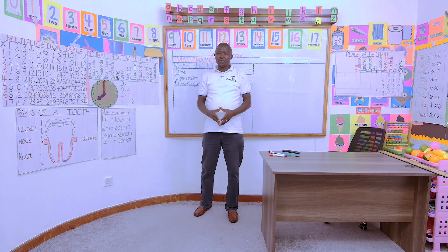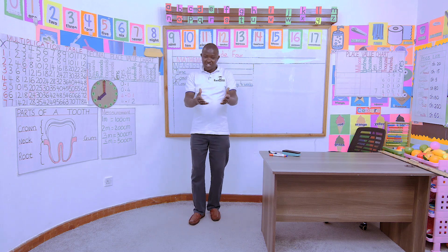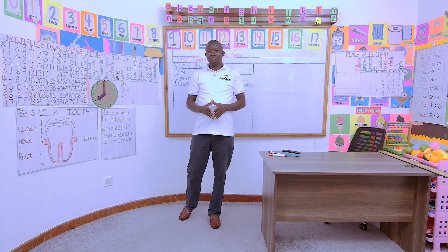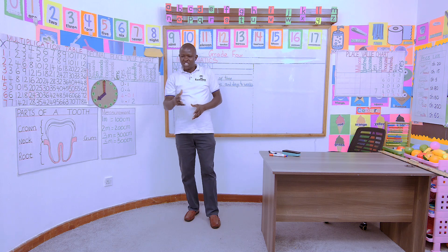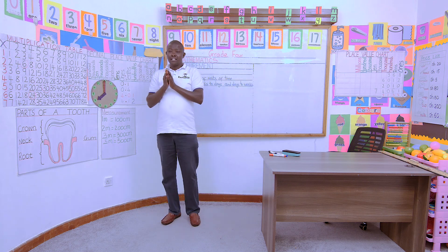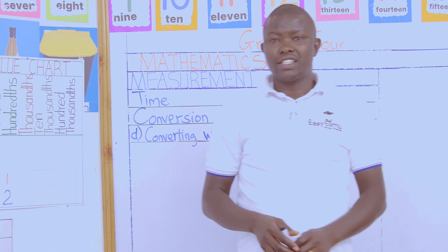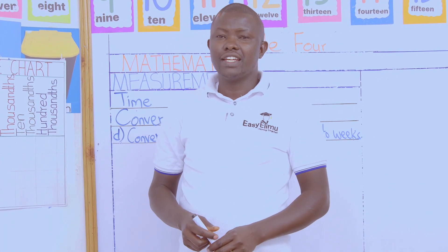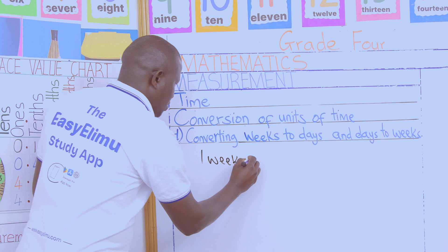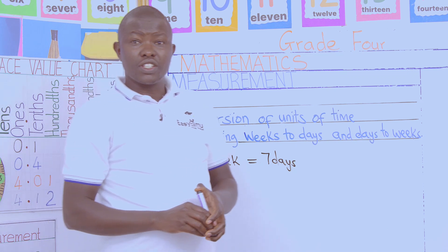In our pairs, I would like to ask a question. How many days do we come to school? Yes, John, you can remind us — we come for five days. Now, how many days do we stay at home over the weekend? We stay for two days. So that makes seven days, then we start again. Therefore, one full week has seven days. Let us note that one week is equivalent to seven days.